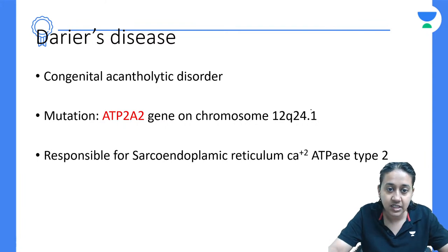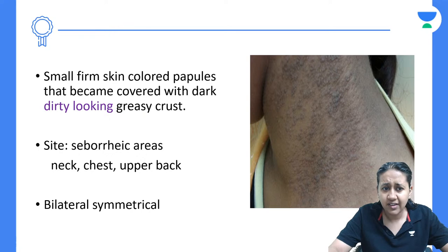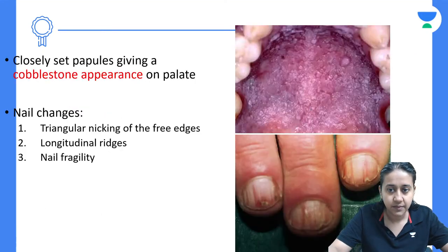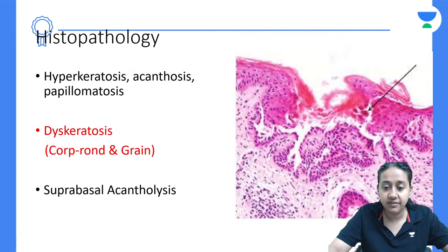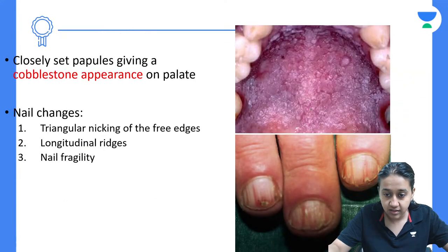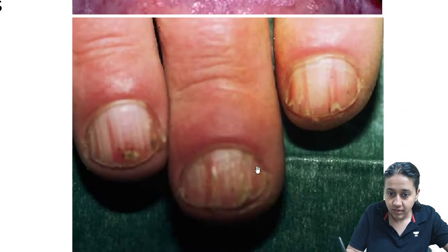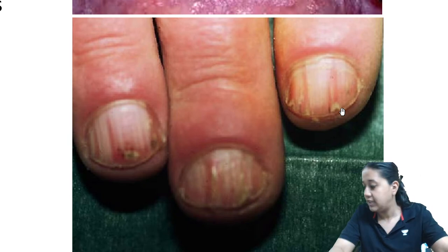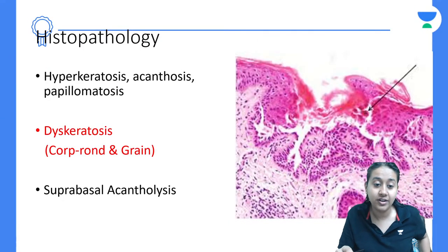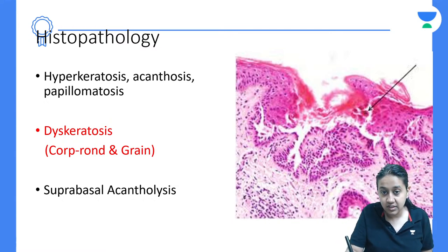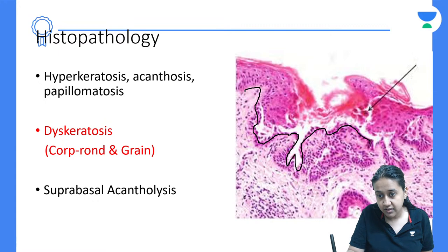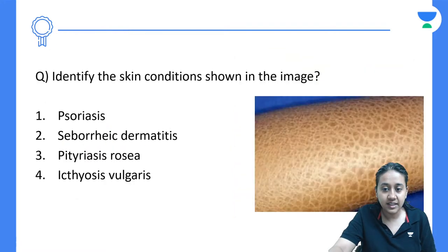To summarize Darier's disease: congenital acantholytic disorder with ATP2A2 gene defect; characteristic follicular keratotic lesions over seborrheic distribution giving a dirty, greasy appearance; mucosal lesions show cobblestoning; triangular nicks on the free edges of nails; histopath shows corp ronde and grains; and supra-basal cleft at the dermoepidermal junction.